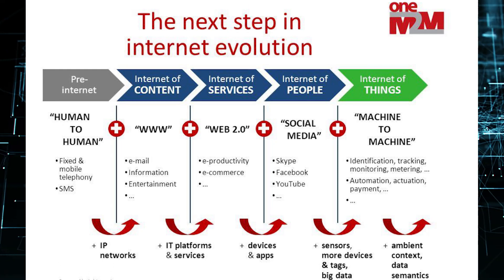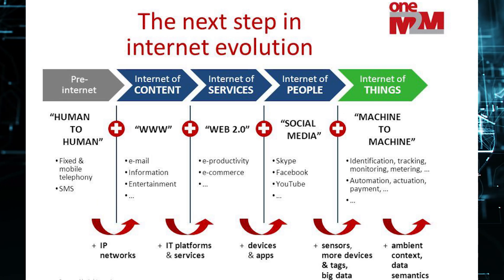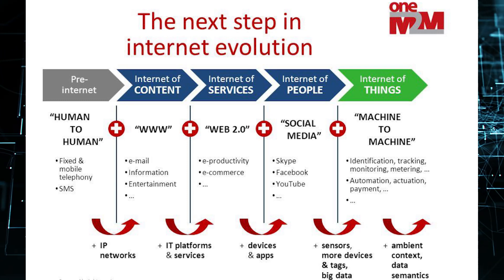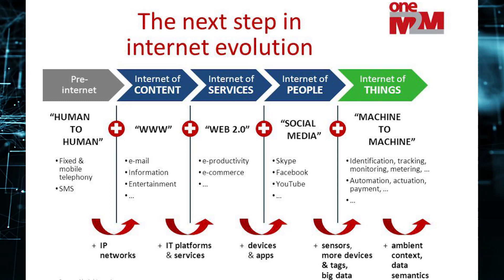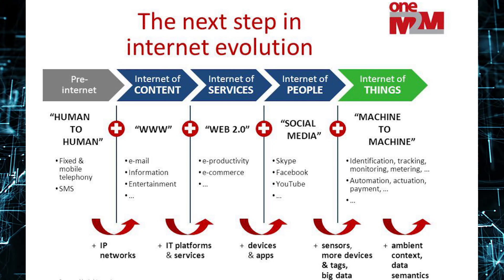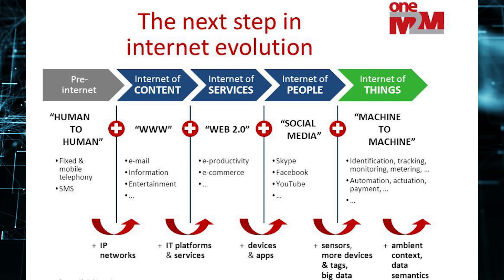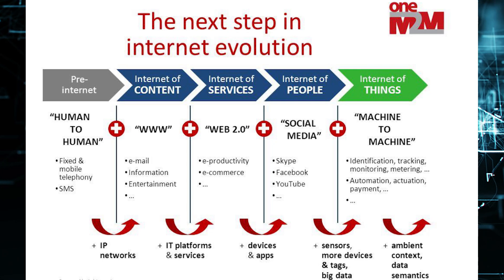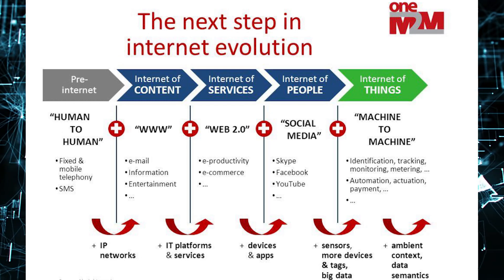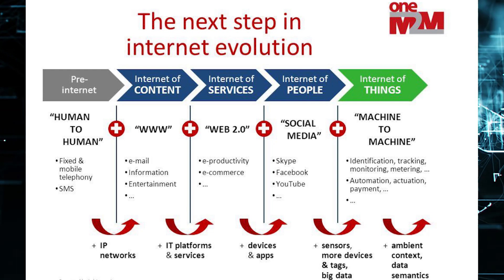Internet of people is us — using social media like Facebook, Skype, YouTube, and Google. The most advanced stage is the internet of things: machine-to-machine communication, identification, tracking, monitoring, automation, and online payment. Development progressed from pre-internet to internet of content through IP networks, then to services via platforms, to people via devices and apps, and to things via sensors, more devices, big data, and data science.